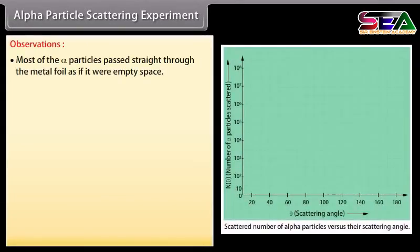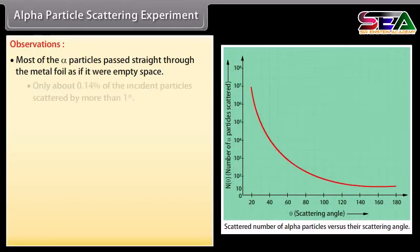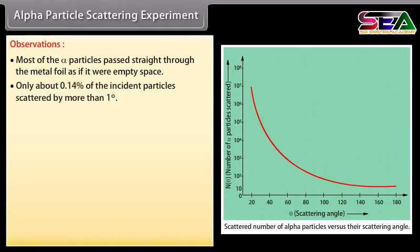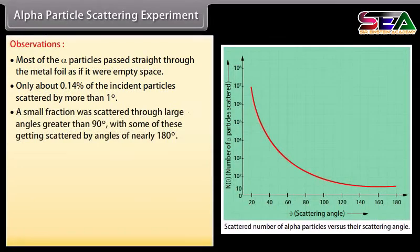Observations: Most of the alpha particles passed straight through the metal foil as if it were empty space. Only about 0.14% of the incident particles scattered by more than 1 degree. A small fraction was scattered through large angles greater than 90 degrees, with some getting scattered by angles of nearly 180 degrees.